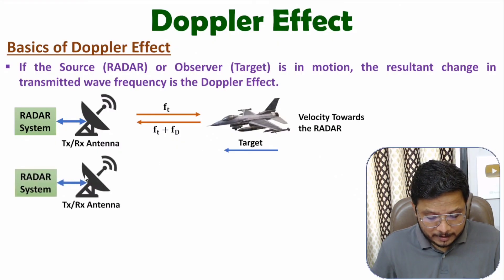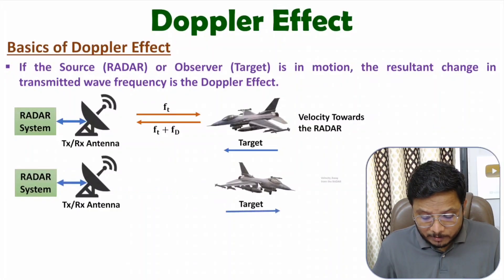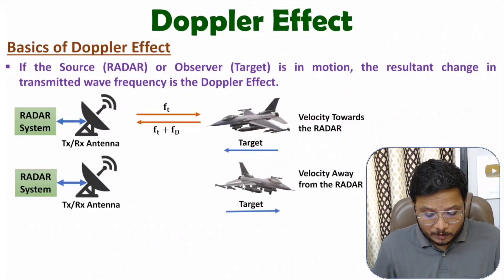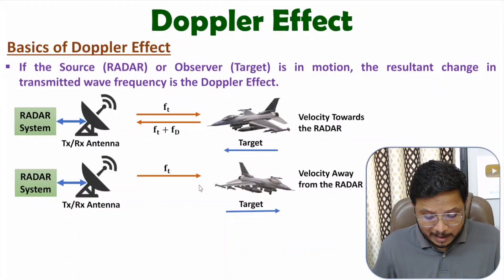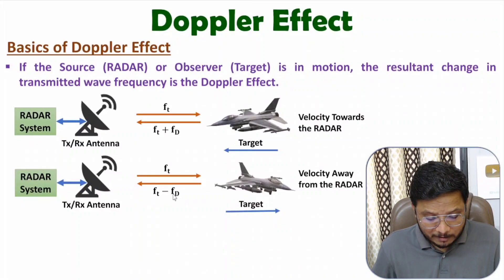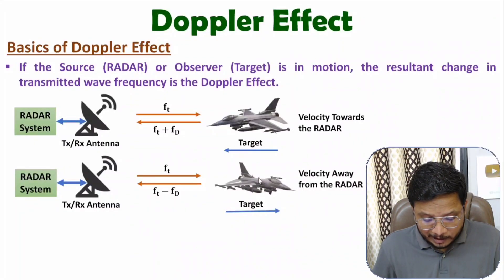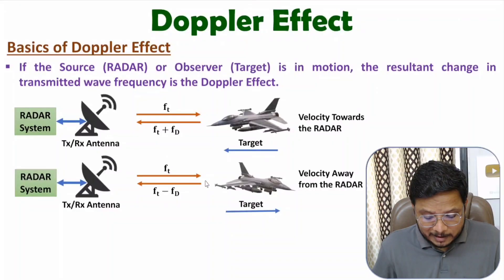Now let us take another scenario where we have a radar system and the target is moving away from the radar. If the radar is transmitting frequency Ft, the reflected echo signal will have a negative deviation. Based on this negative deviation, the radar can identify the motion of the target, calculate its velocity, and determine that the target is moving away from the radar.